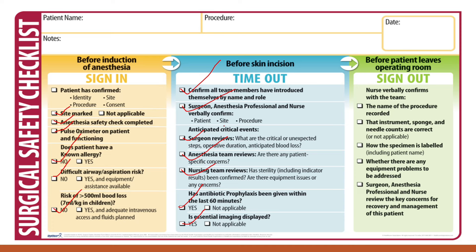The last phase is sign out — done before the patient leaves the operating room. The nurse verbally confirms the name of the procedure recorded, that instrument, sponge, and needle counts are correct, and how the specimen is labeled, including the patient's name. Any equipment problems to be addressed are noted. The surgeon, anesthesia professional, and nurse review key concerns for recovery and management of the patient.